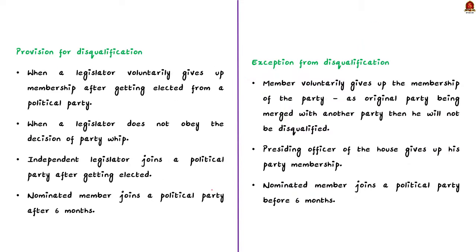The 10th Schedule has various provisions for disqualification of elected members who defect. First, a legislator is disqualified if he voluntarily gives up the membership of the political party under whose ticket he came to power. Second, legislators can be disqualified if he votes or abstains from voting contrary to the direction of the whip of his political party. Third, if an elected member not part of any political party joins another political party after getting elected, he will be disqualified. Fourth, in the case of nominated members, if he joins a political party after the expiry of six months from the date he takes his seat, he will be disqualified.